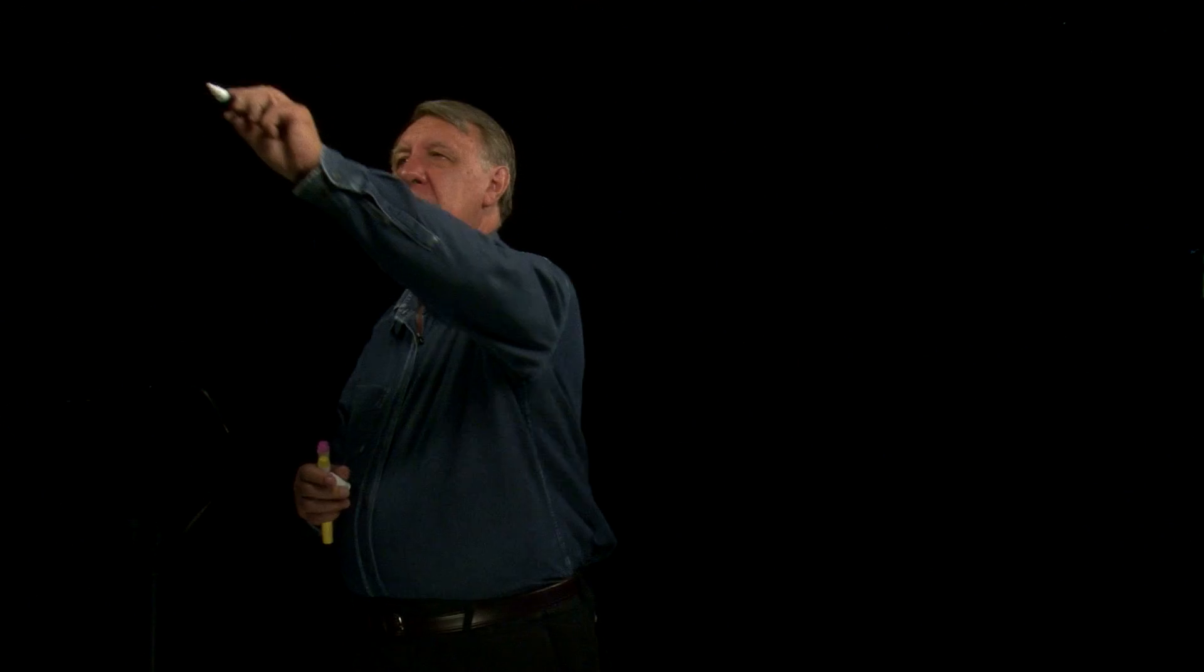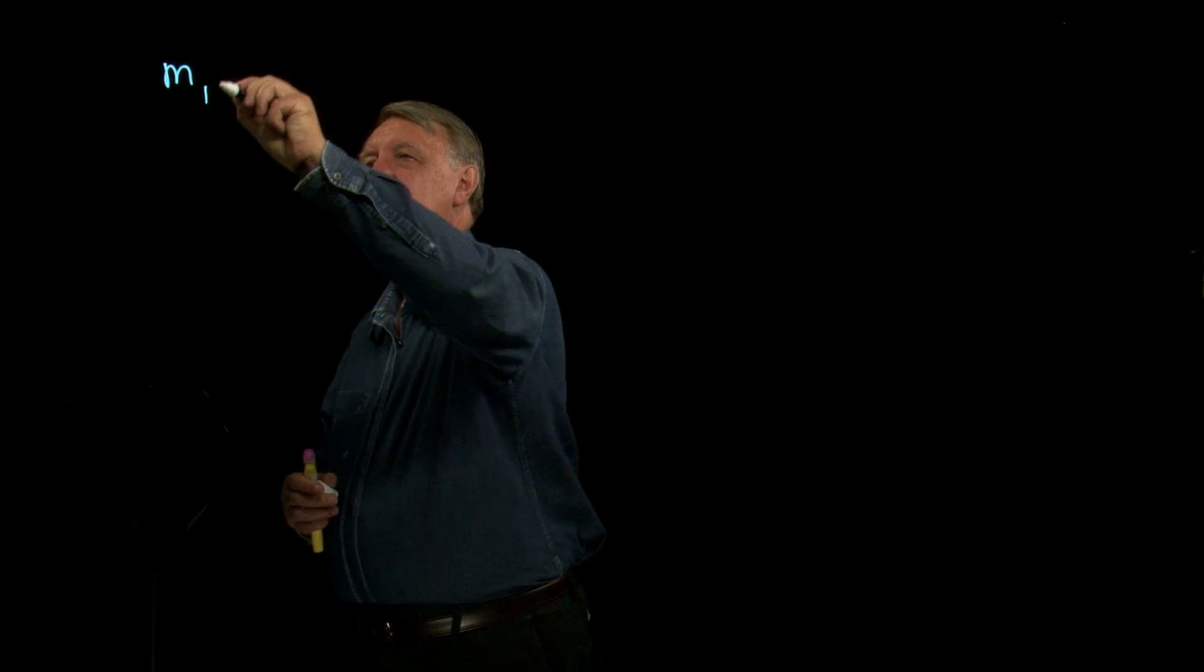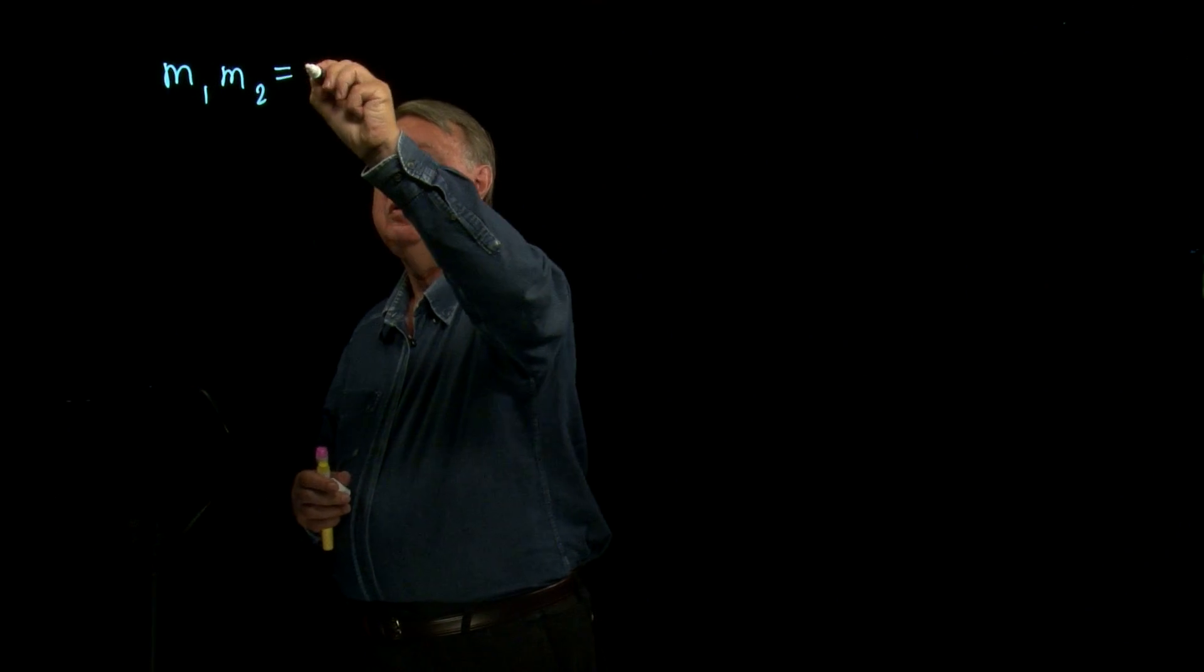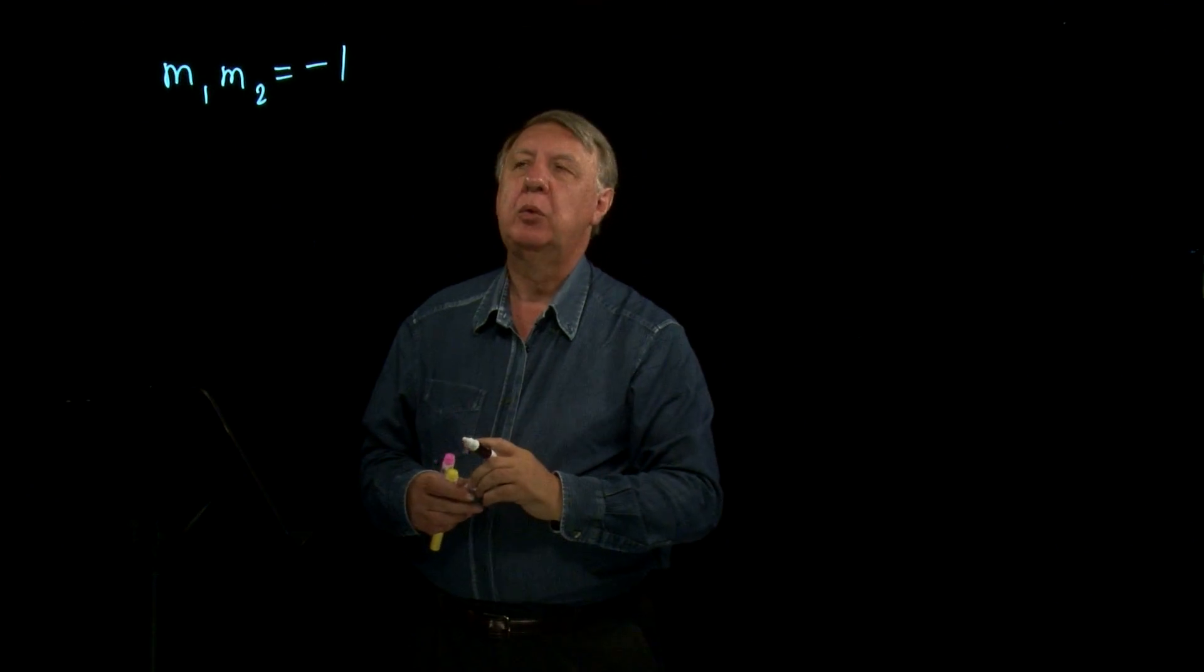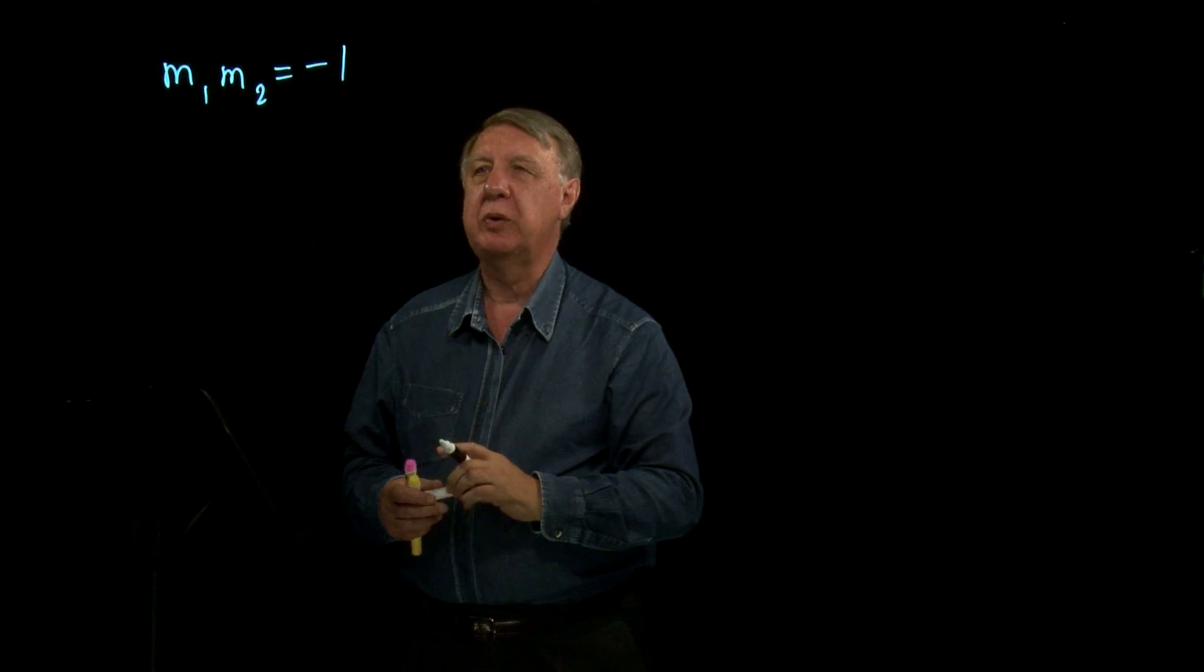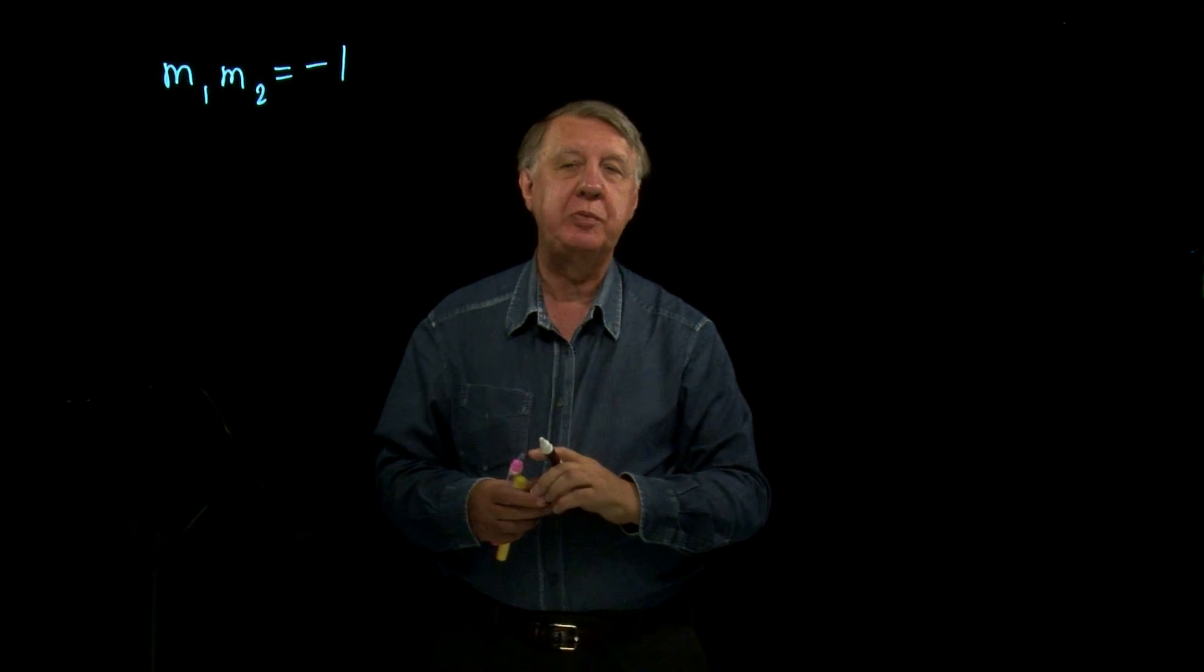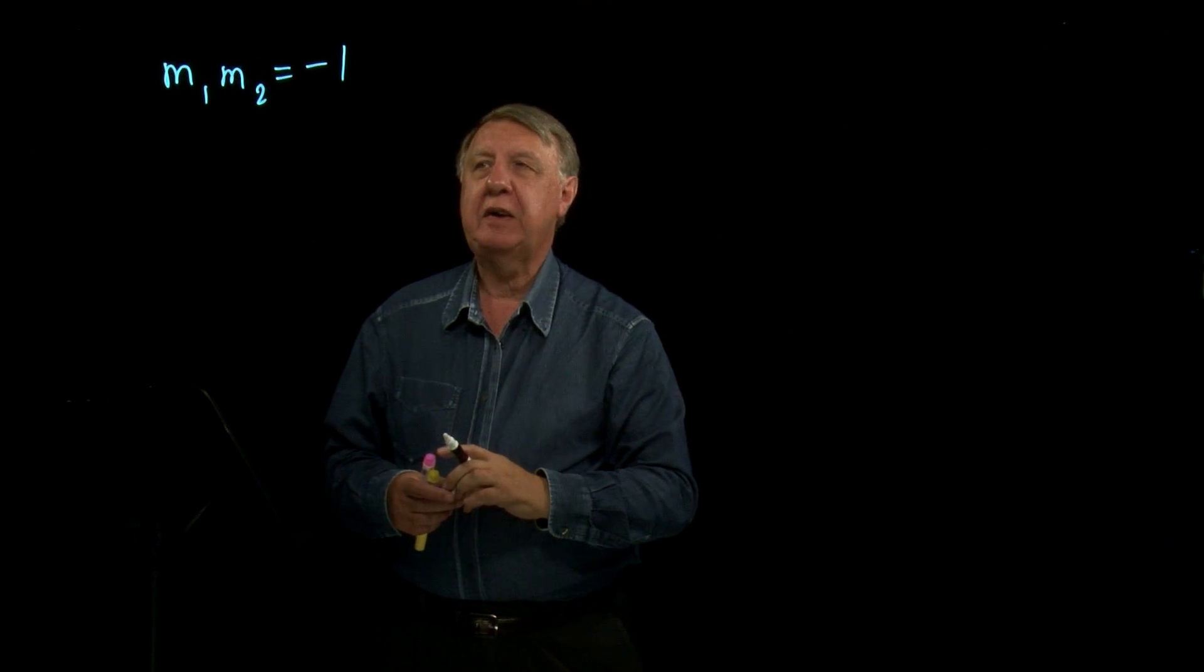I'm going to take another look at perpendicular lines now, and we're going to start by reminding ourselves of the formula m1 times m2 equals negative 1, where m1 and m2 are the gradients of two perpendicular lines.